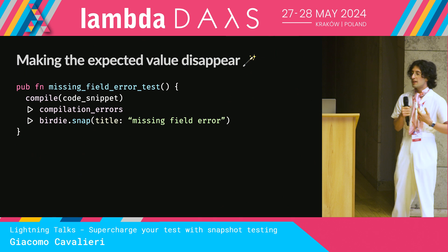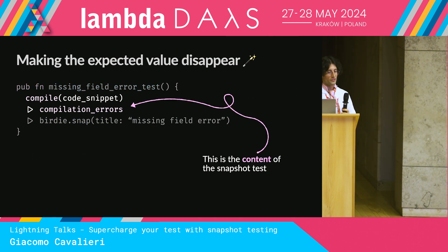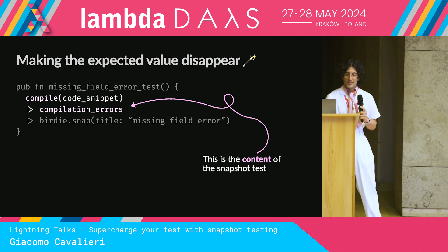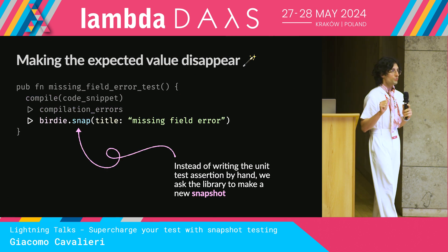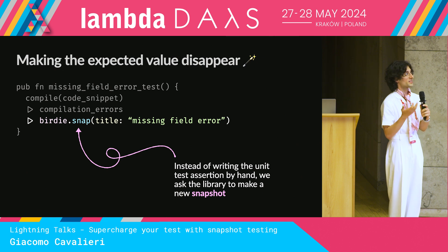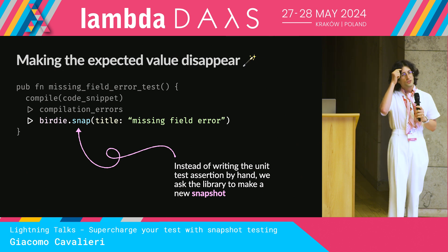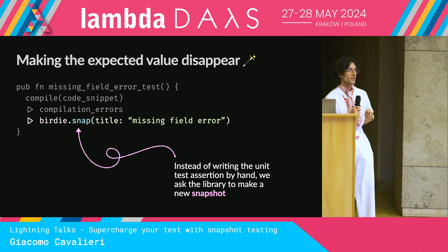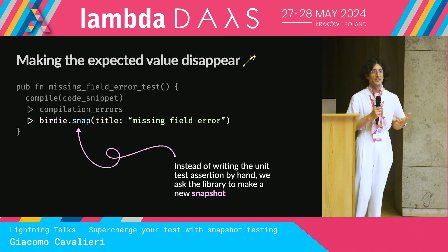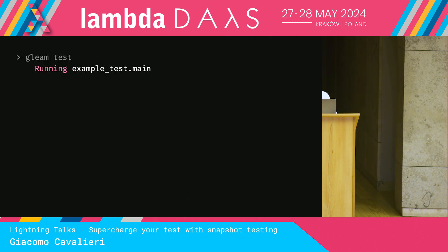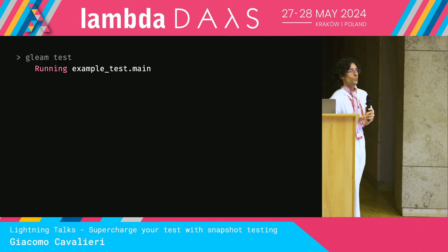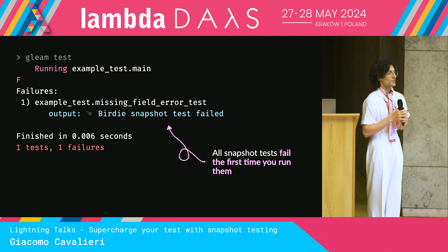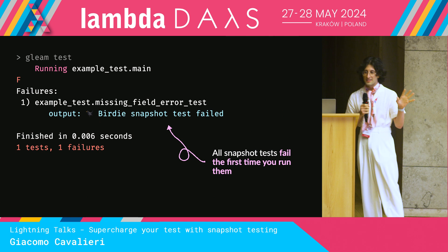The library is called Birdie. What is going on here? We still have the piece of code we want to be testing, of course, but now instead of writing an assertion, what we're doing is we're asking the library to produce a snapshot. That looks a bit magical — how can the library know when our test should pass or should fail? Of course it can't read our minds. If we run our test, not really exciting — the test is just going to fail, so it would be quite a useless library if we only get red tests.